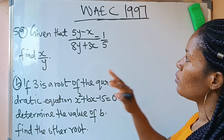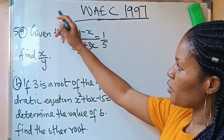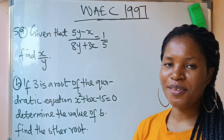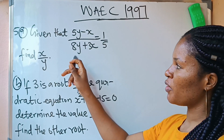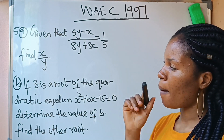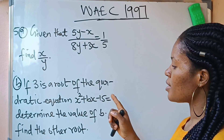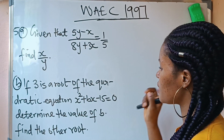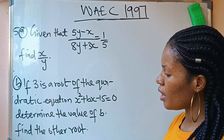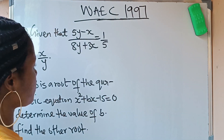Welcome to my channel. This is a continuation of my previous video where I solved part 5a. I promised to solve part b in my next video, so this is me fulfilling that promise. The question says: if 3 is a root of the quadratic equation x squared plus bx minus 15 equals 0, determine the value of b, and also find the other root.